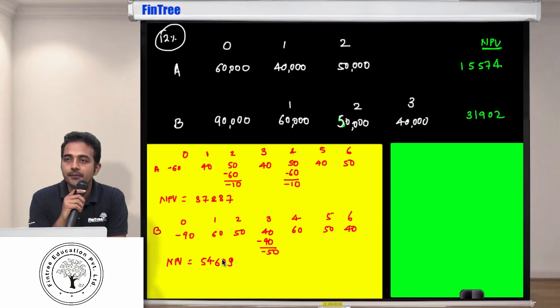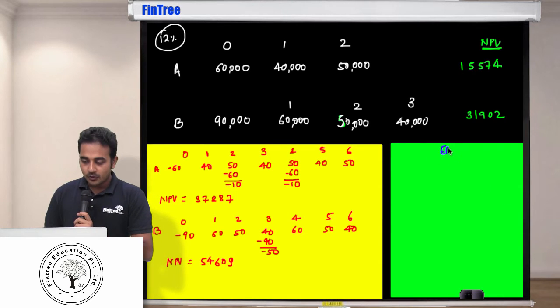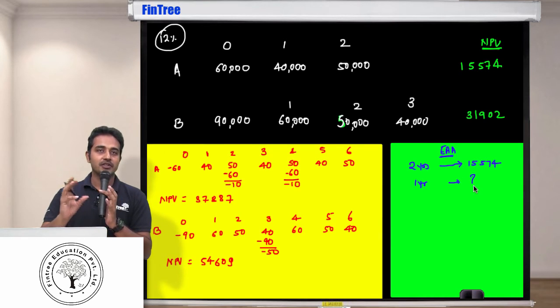Now EAA method is even easier. What you do in equivalent annual annuities, you would say that for two years we are earning 15,574. This is what we are earning in totality for two years. So how much should we earn per year? But don't do any cross multiplication because there is a time value of money involved.